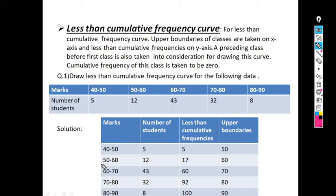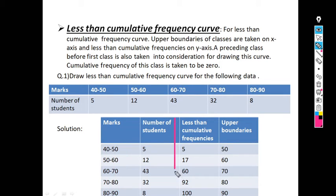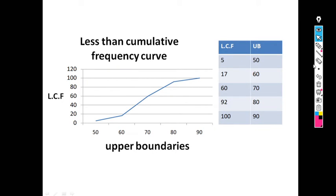Next, we require the upper boundaries. The classes are 40 to 50, 50 to 60, up to 80 to 90. So 50, 60, 70, 80, and 90 are all upper boundaries, while 40, 50, 60, 70, and 80 are all lower boundaries. Now for this data, using LCF and upper boundaries, we plot the less than cumulative frequency curve. LCF stands for less than cumulative frequency and UB stands for upper boundary.